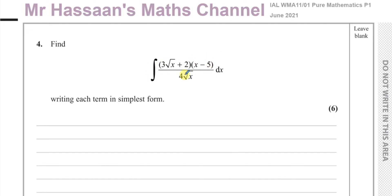Now in order to integrate this, first I need to simplify this whole expression. So I need to put them as separate terms, and then I can integrate each term separately. So I need to expand this bracket and divide by 4 root x.